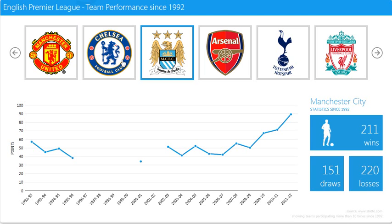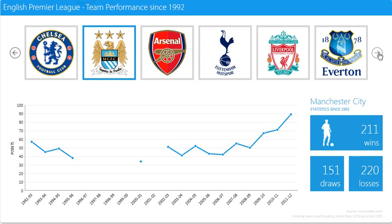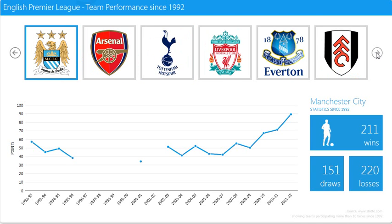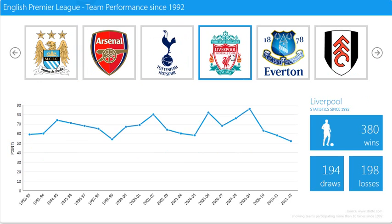Here's another one — I can just scroll through, and then I can click on a particular image, and the graph updates correspondingly below, along with the actual data itself.